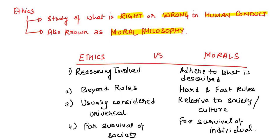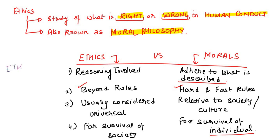There is a huge difference between ethics and morals. Ethics involves reasoning — it is beyond rules and regulations and is considered universal. Morals, on the other hand, adhere to what is described by society or culture. Ethics are required for the survival of society, while morals are required for the survival of the individual. Simply put: ethics equals morals plus reasoning.